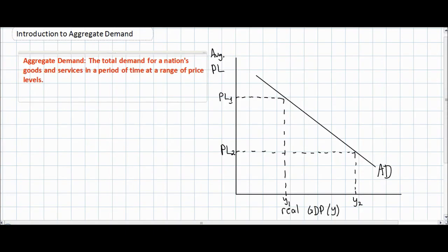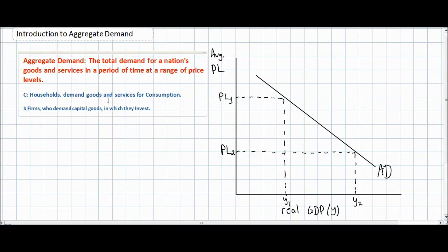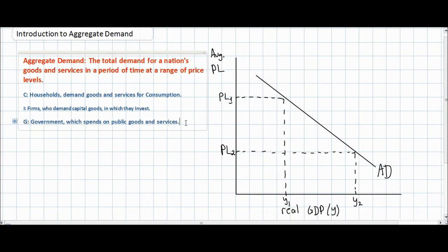There are four components of a nation's aggregate demand, each representing different stakeholders or consumers of a nation's output. We have households who demand goods and services for consumption, abbreviated as capital C. In addition, firms demand capital goods in which they invest, abbreviated as capital I. Next we have the government sector, which spends on public goods and services including education, infrastructure, and health care, abbreviated as capital G.